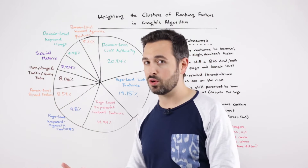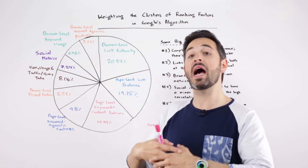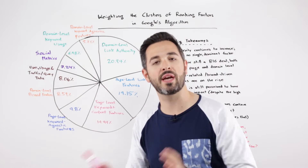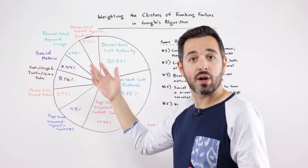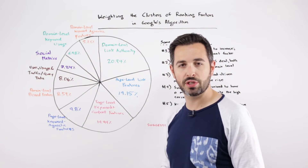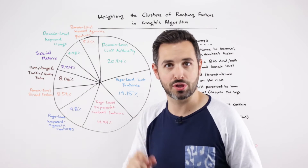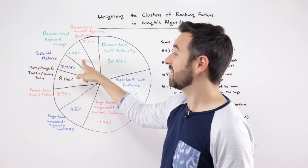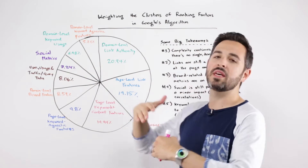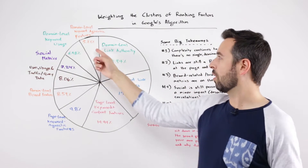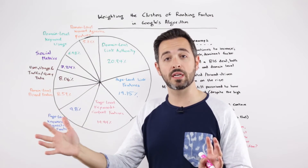User usage data covers things like: are there lots of people visiting your website, are people searching for your domain name, for your pages, for your brand name, how are people using the site, do you have a high bounce rate or a lot of engagement? Social metrics — Twitter, Facebook, Google+, et cetera. Domain-level keyword usage: if I'm trying to rank for blue shoes, do I have blue shoes in the domain name, like blueshoes.com? This is one that's been declining. And then domain-level keyword agnostic features — things like the length of domain name registration, how long the domain name is, the domain name extension.